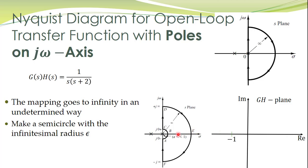Here is the idea: we slightly change the contour, our closed path. We make a small semicircle here — this small semicircle is called a detour, and its radius approaches 0. What we can see is that this closed path, this contour, still encompasses the whole right half s-plane, because the radius of this small semicircle is approaching 0 and the radius of the bigger semicircle is infinity. So this closed path encompasses the whole right half s-plane.